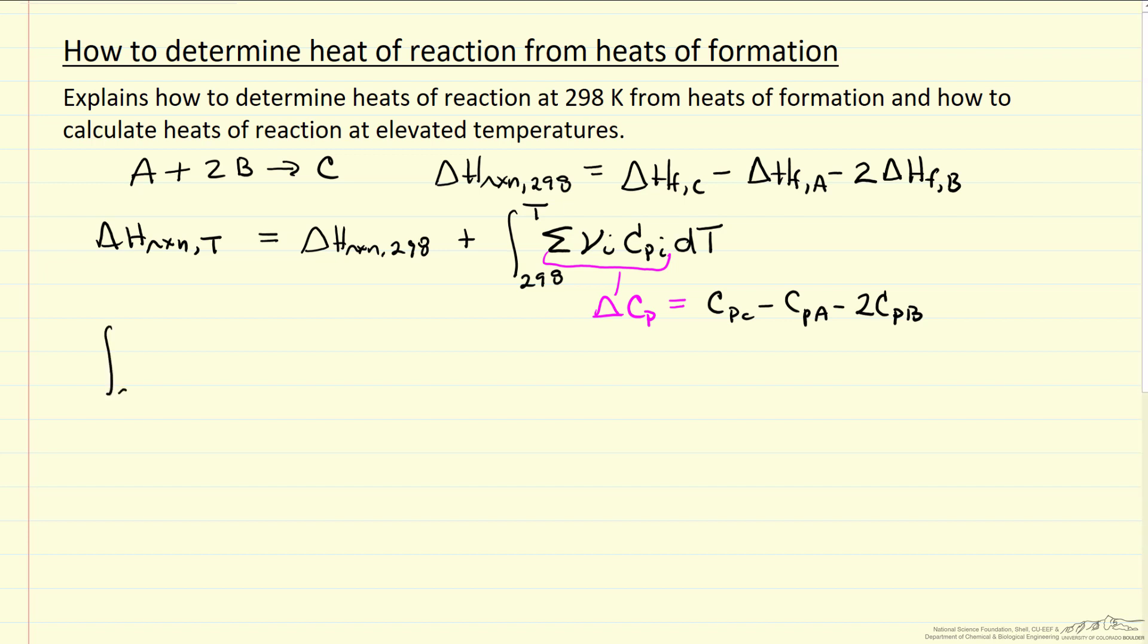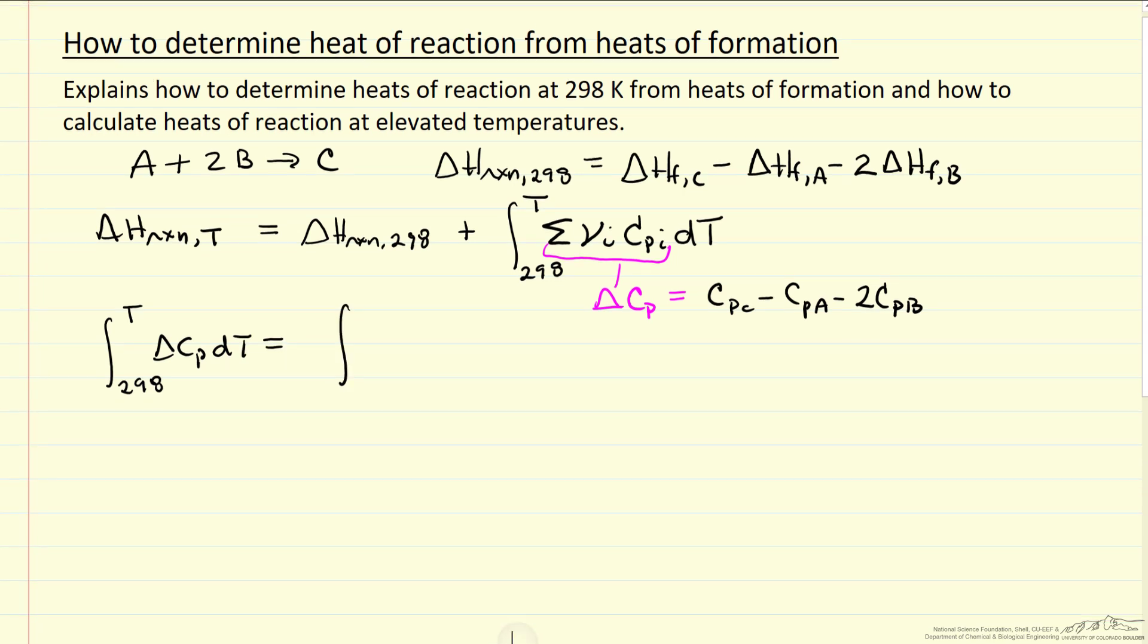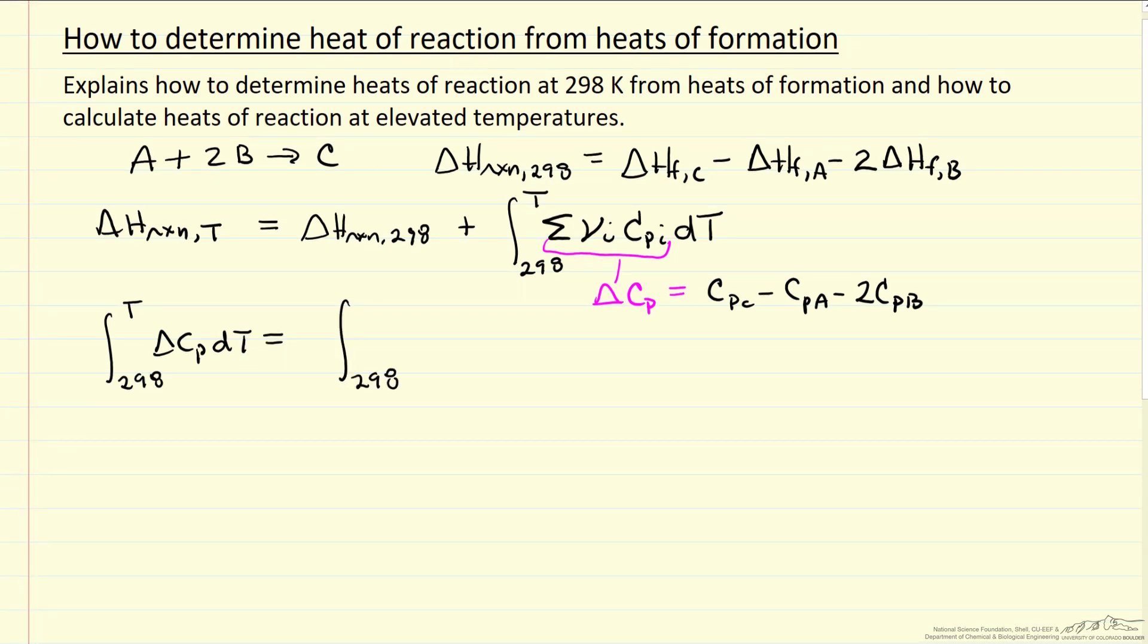So that means this integral term of delta Cp dT could be rewritten as heat capacity of the product minus, I'm going to change the minus to a plus and put T here and 298 here. And this is heat capacity of A plus 2 times heat capacity of B.